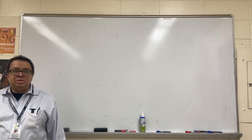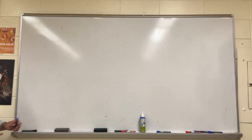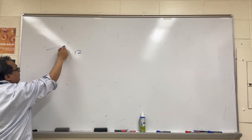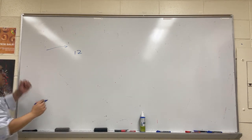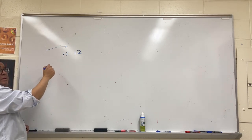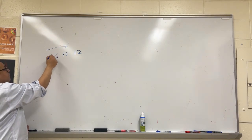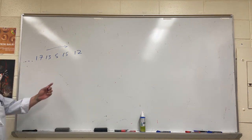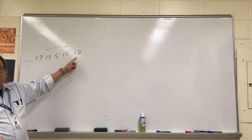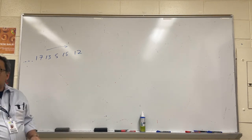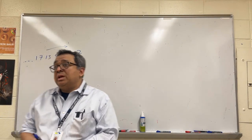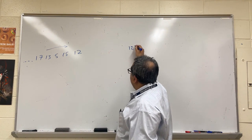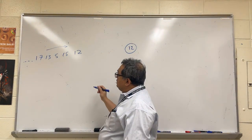Let's say I have some information being fed to me in a stream - numbers like 12, 15, 5, 13, 17, and more. The first number I get is 12, and I need to save it, so we're going to build a binary search tree. The 12 is going to be our root.